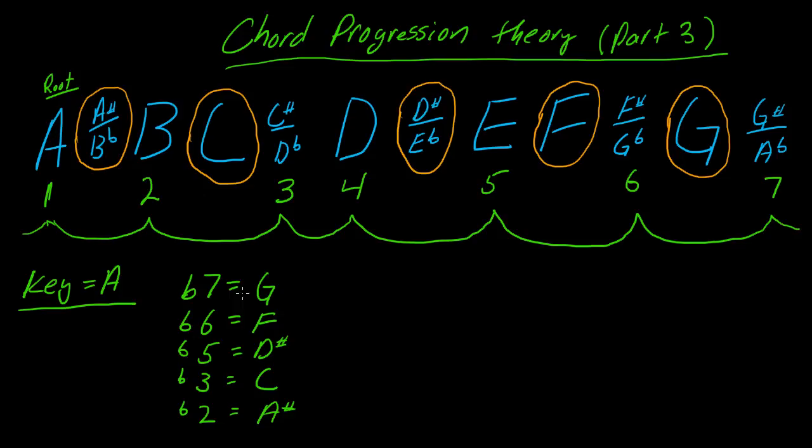The other thing that you need to know is, by default, whenever you see one of these five flatted chords, they are by default major chords. So flat 7 is a G major, flat 6 is an F major, flat 5 is a D sharp major, flat 3 is C major.